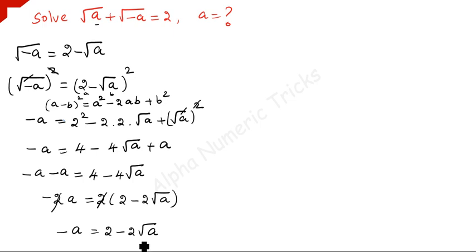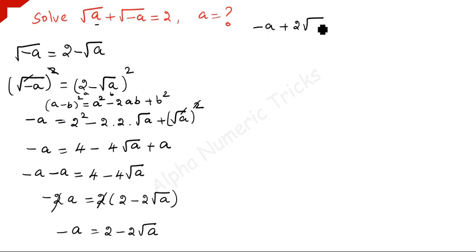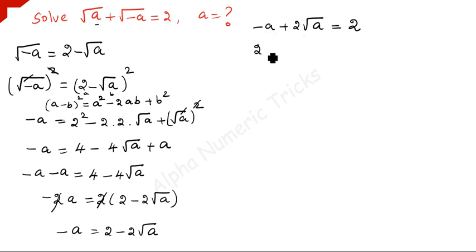Now take the 2 square root of a to the left-hand side. Since there is a minus, it becomes plus. So we have minus a plus 2 times square root of a equals 2. Again take minus a to the right-hand side, so 2 square root of a equals 2 plus a.